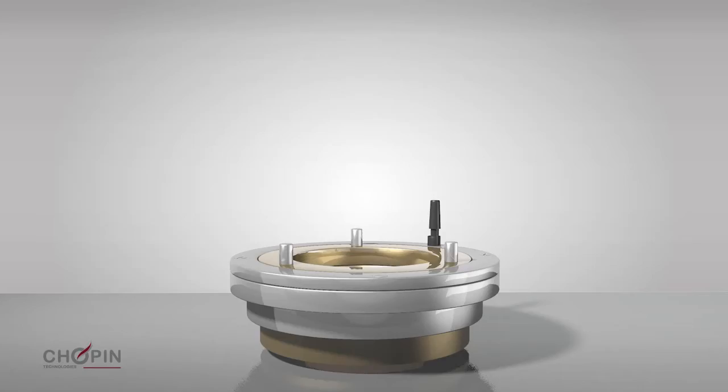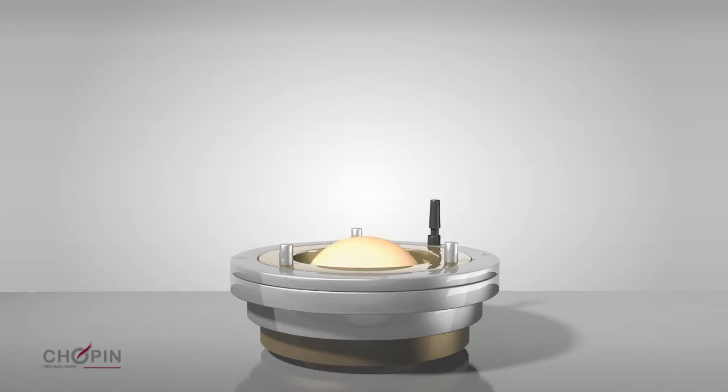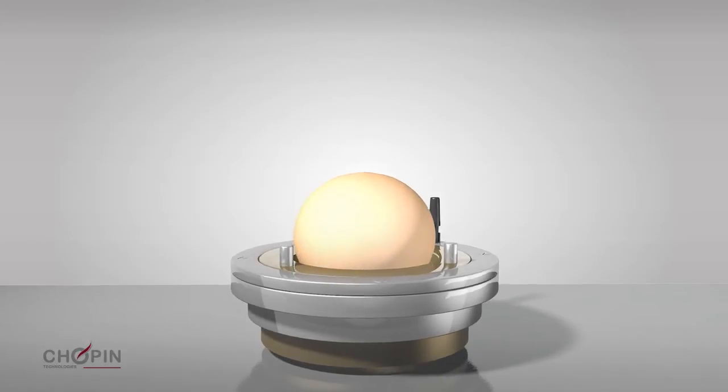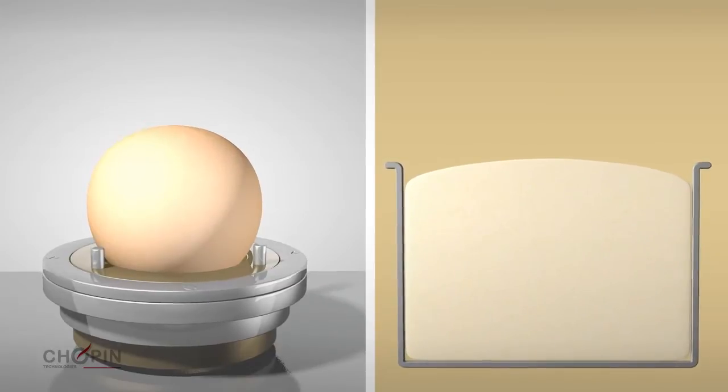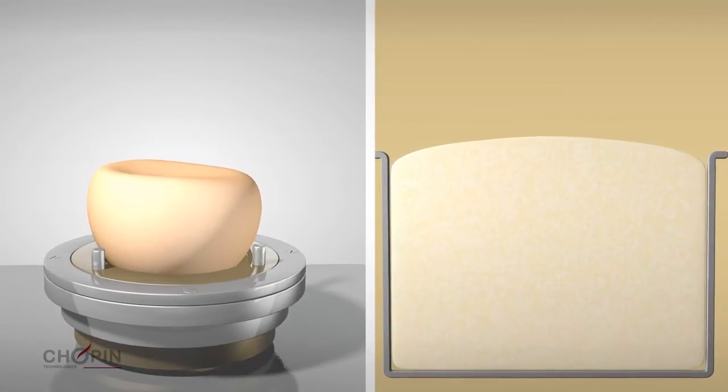An alveograph test involves measuring the deformation of a dough bubble caused by a specific pressure generated using air. This dough extension method simulates the deformation the dough undergoes during fermentation due to the pressure generated by carbon dioxide.